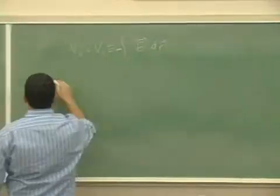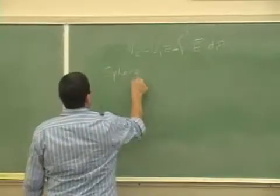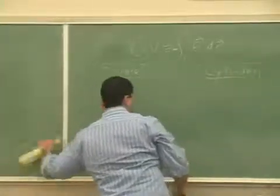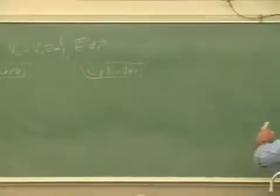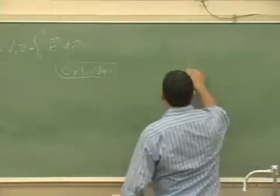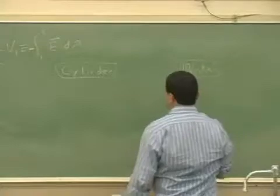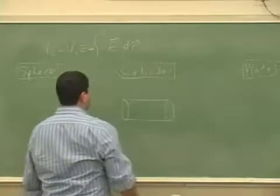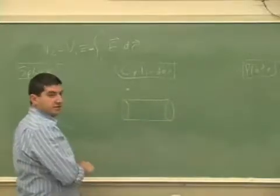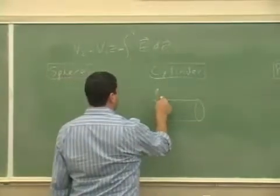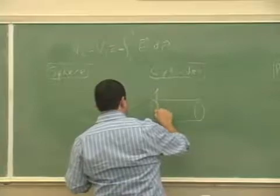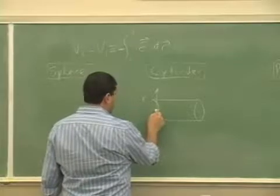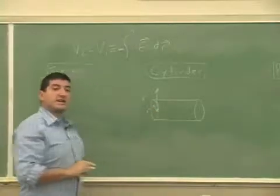For example, let's say you have a sphere, or you have cylinders, or you have a sheet or a plate. Let's say here's a cylinder, and I want to find the potential at a certain distance from the cylinder — from the center of the cylinder to a certain distance R — or I want to find the potential at a certain distance R inside of the cylinder.